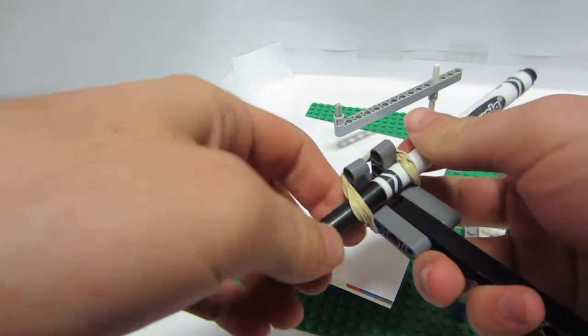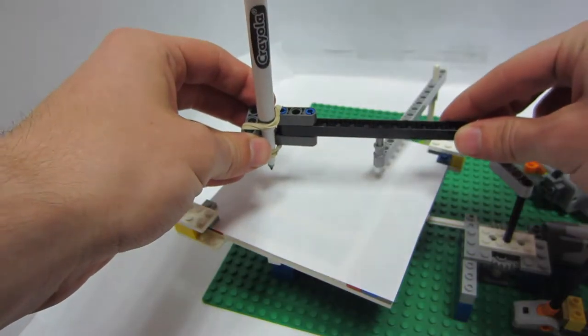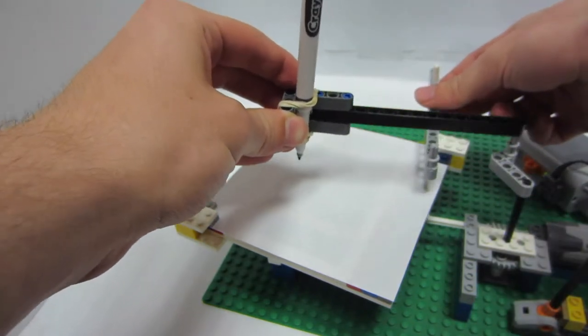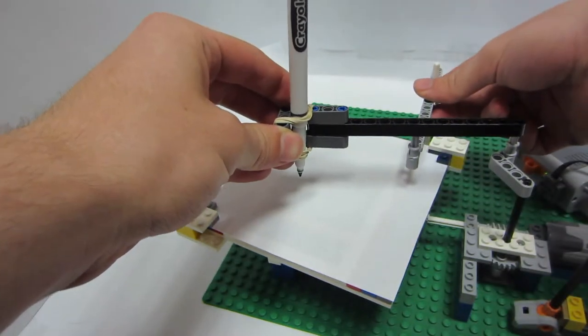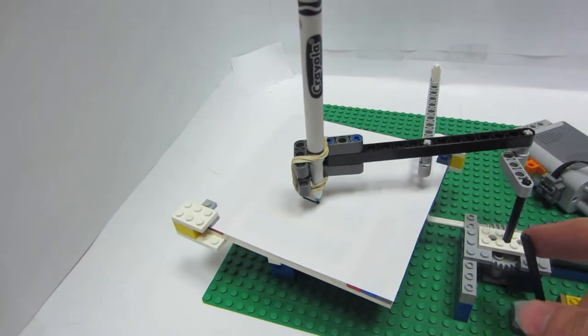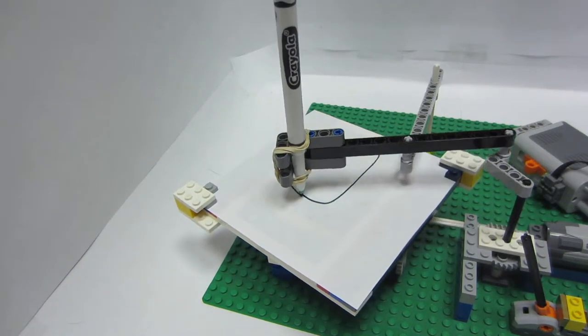Then we can uncap the marker. We'll set it down at one of our settings and turn it on. You can see it starts drawing a picture.